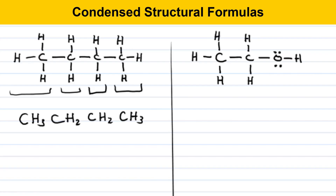It doesn't contain any bonds, but it does convey connectivity information. It's important to note that the Hs are shown together, but they're not bonded to each other. Each hydrogen only makes one bond. Carbon makes four bonds, and it's important to keep these rules in mind when you're interpreting condensed structural formulas.